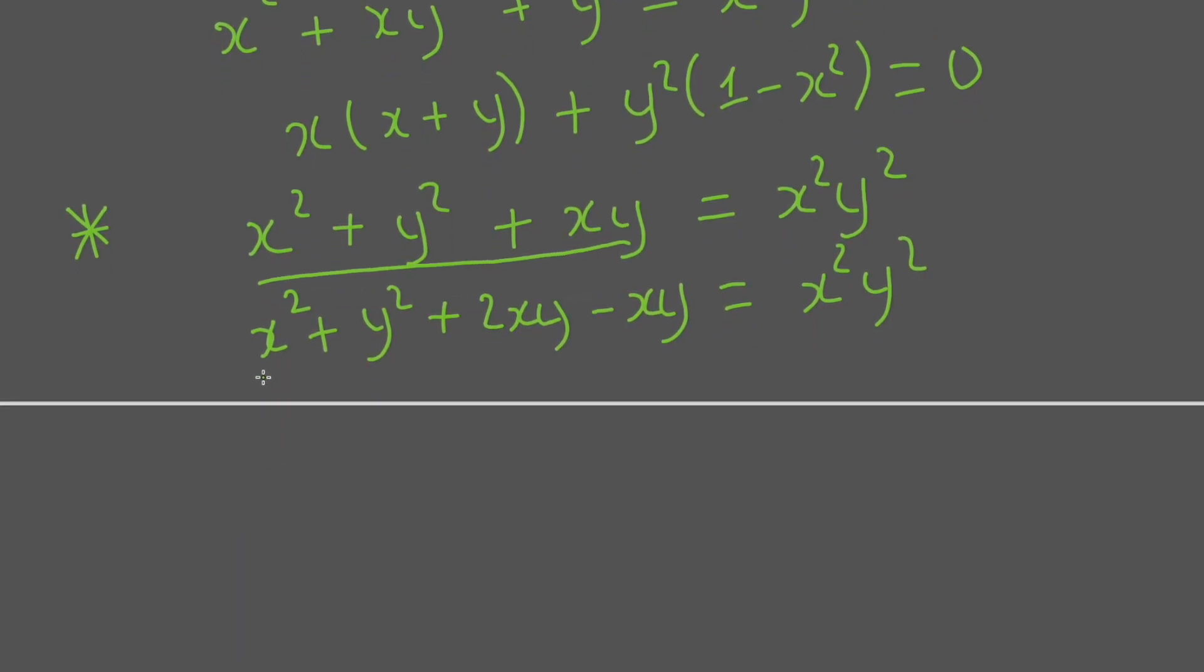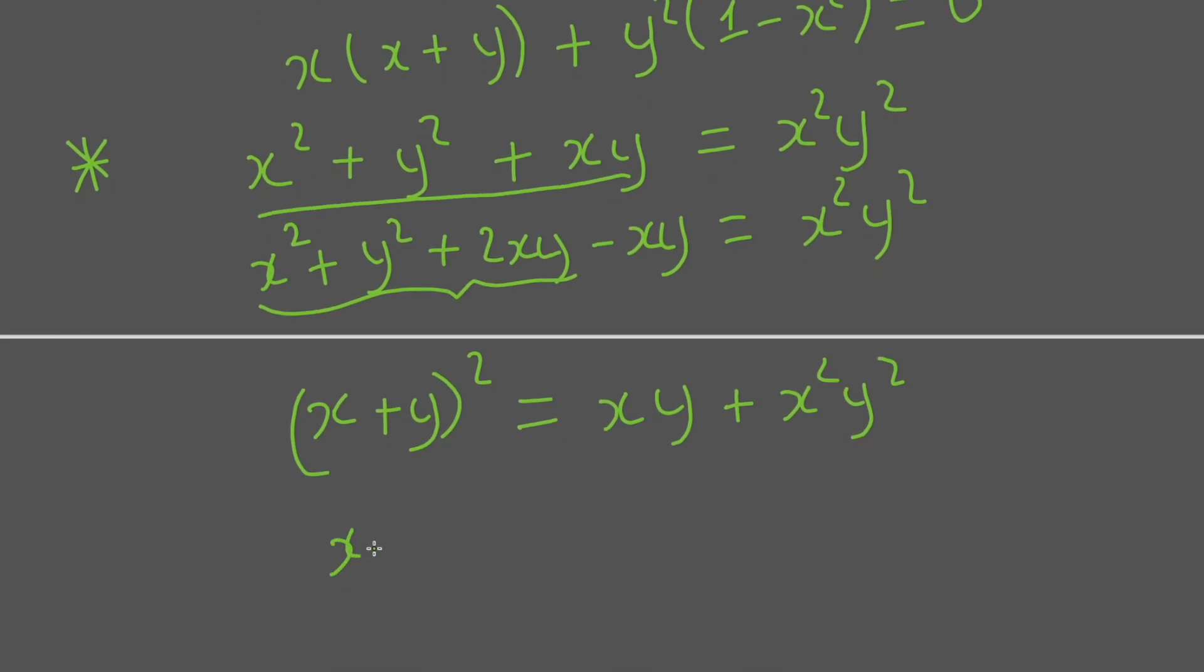And now we will see that it becomes (x + y)² = xy + x²y². It will be (x + y)² = xy times (xy + 1).